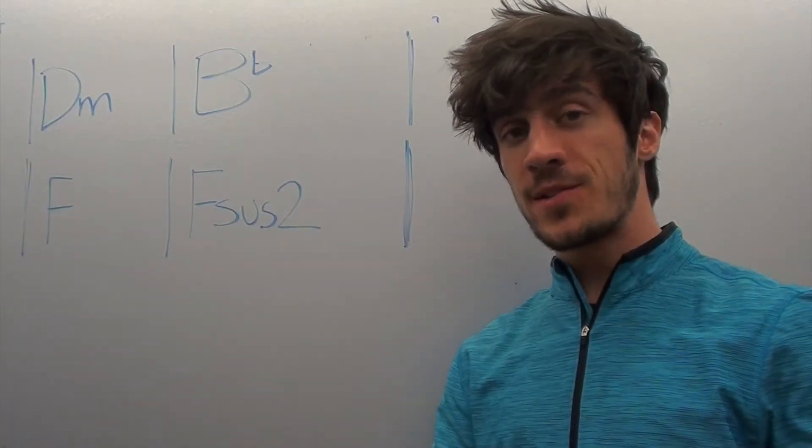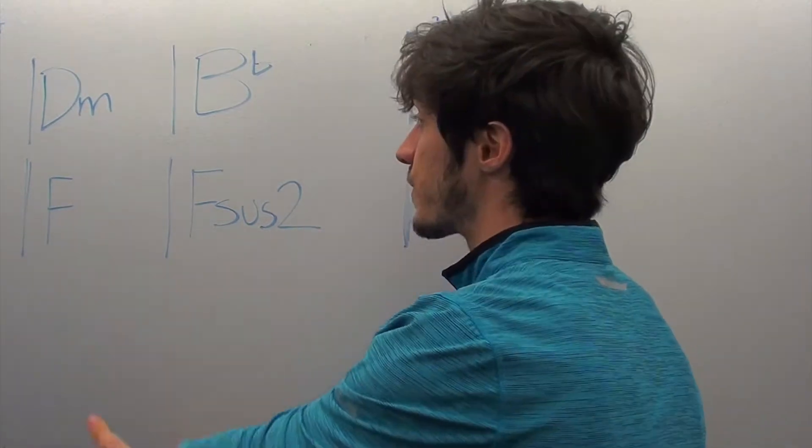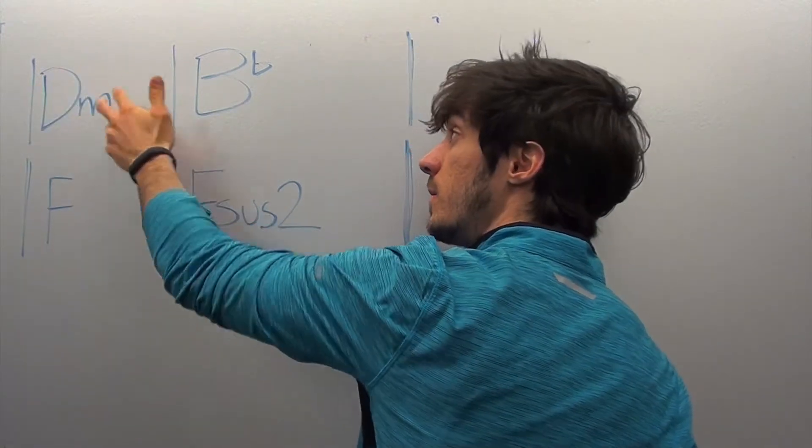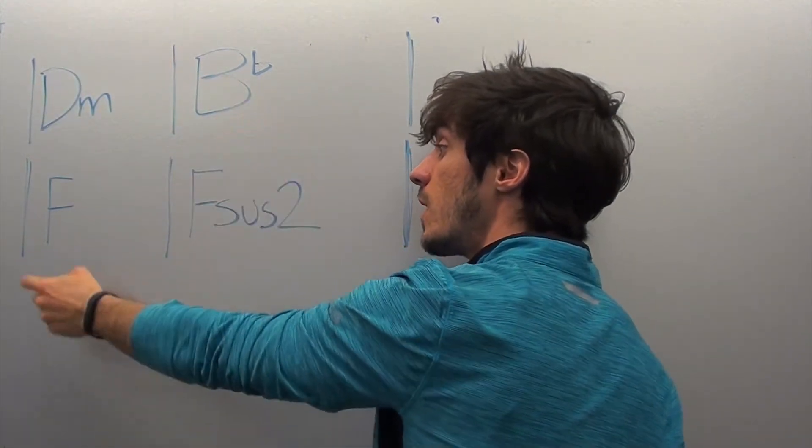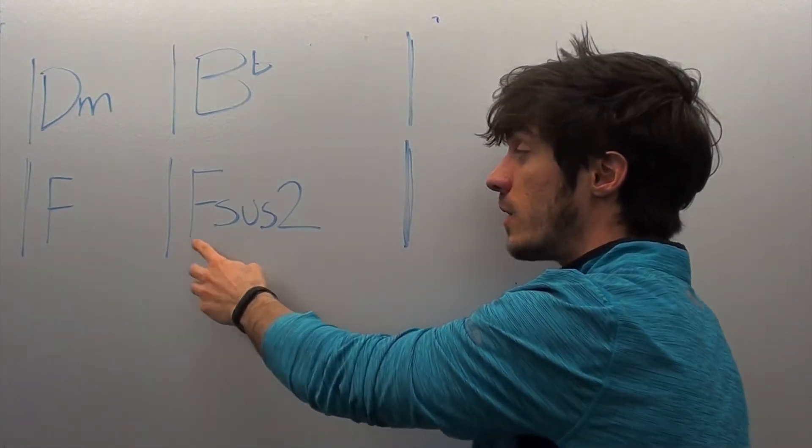So the first thing about this song that makes it so successful is how Chris Martin writes the chords into the song. So it starts on a D minor. Come up to meet you, goes to B flat, tell you I'm sorry, goes to F, you don't know how lovely you are.